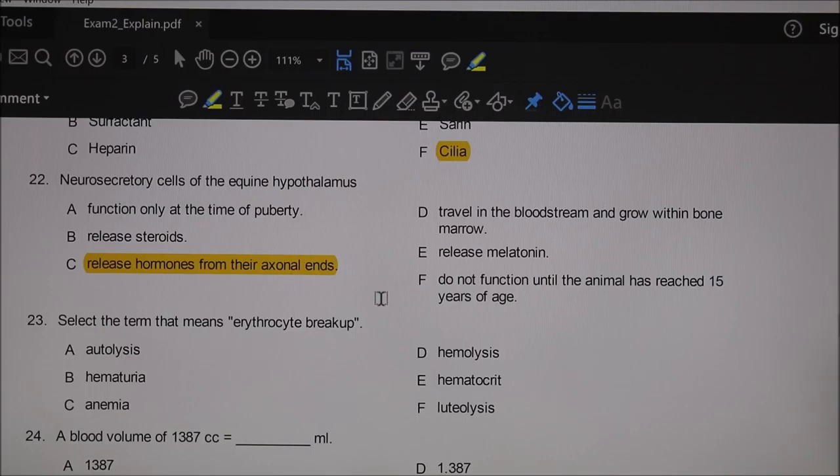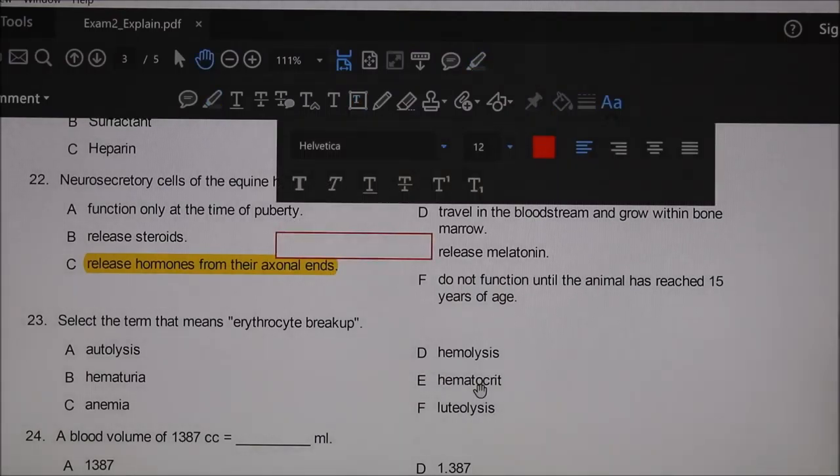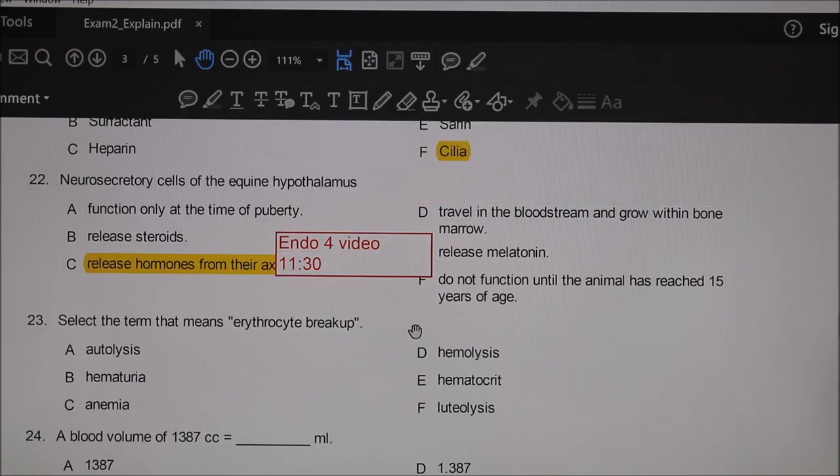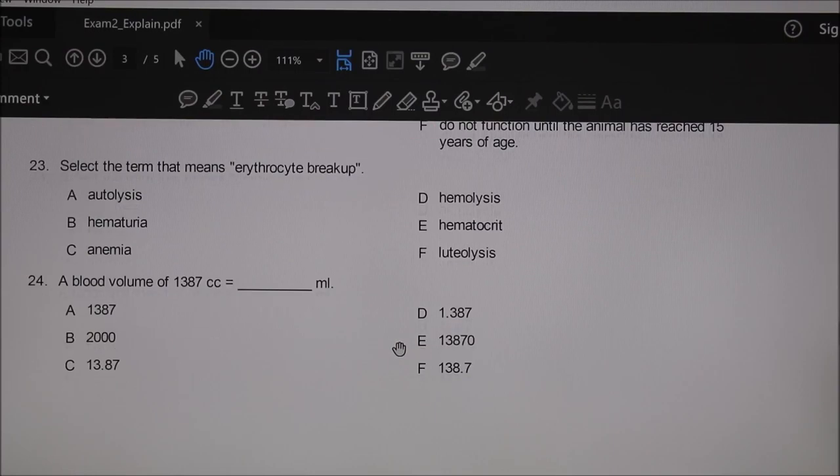Neural secretory cells of the equine hypothalamus release hormones from their axonal end because all these cells are neurons. If you want to go to the Endo 4 video, the minute marker is 11:30—11 minutes and 30 seconds into that video.